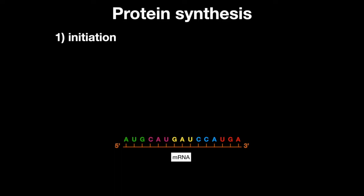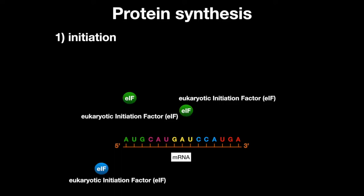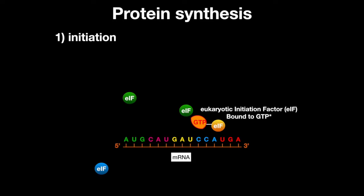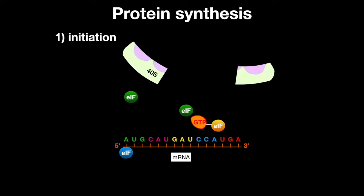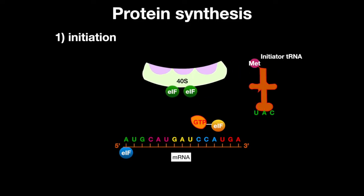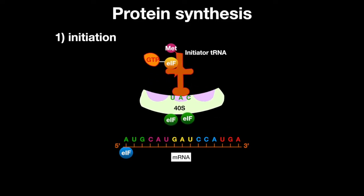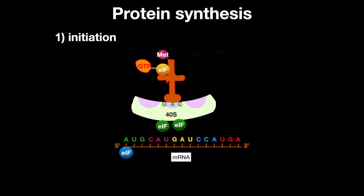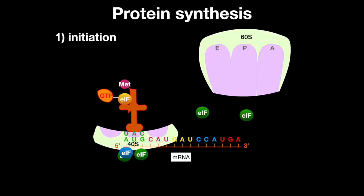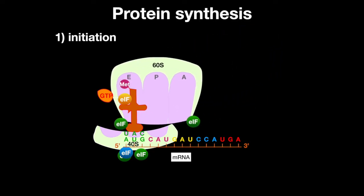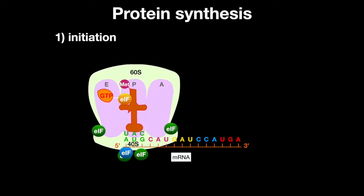Now initiation can begin. Eukaryotic initiation factors, or EIFs, locate the 5' cap. Next, the EIFs build the 40S ribosomal subunit along with initiator tRNA. This complex scans the mRNA until it finds a start codon. The EIFs will then find and assemble the 60S ribosomal subunit. Then the EIFs get released by GTP hydrolysis.